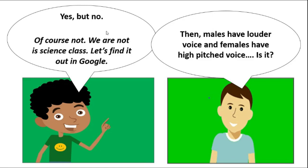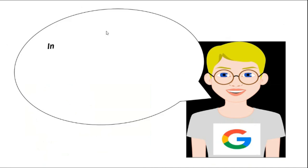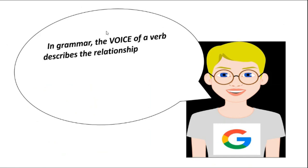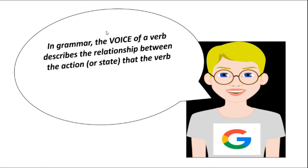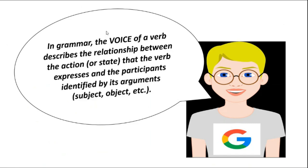Let's find it out in Google. In grammar, the voice of a verb describes the relationship between the action or state that the verb expresses and the participants identified by its arguments — subject, object, etc.